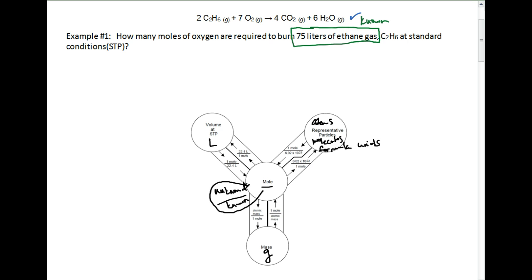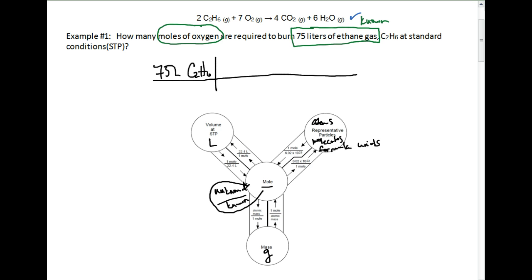Our unknown quantity is moles of oxygen — we're looking for moles of O2, so that's our ending point. We're going to create a picket fence and put our known quantity, 75 liters of C2H6, at the top. We're starting at volume on the mole road and going to moles of O2. It's not a one-step problem because ethane is our starting substance and oxygen is our ending substance. Anytime you have two different substances, you must go around the unknown over the known using the mole ratio. So we go from liters down to moles using the conversion factor one mole over 22.4 liters.